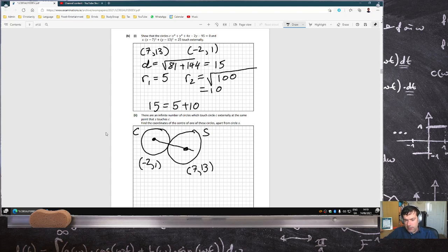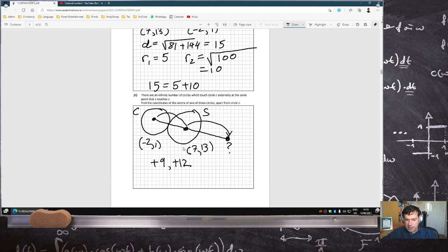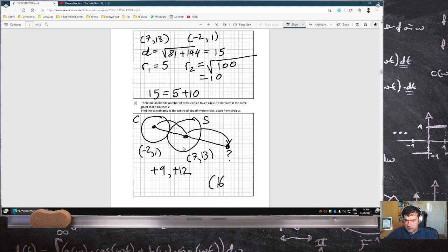But I think what I'll do is I'll just extend this line out further to make another point here. I'll just go out the same distance. And then just draw a larger circle here. So I'll just find this point, which is the same distance out. So to go from here to here, I have to add 9 and add 12. So if I just do that two times, I finish up at (16,25).